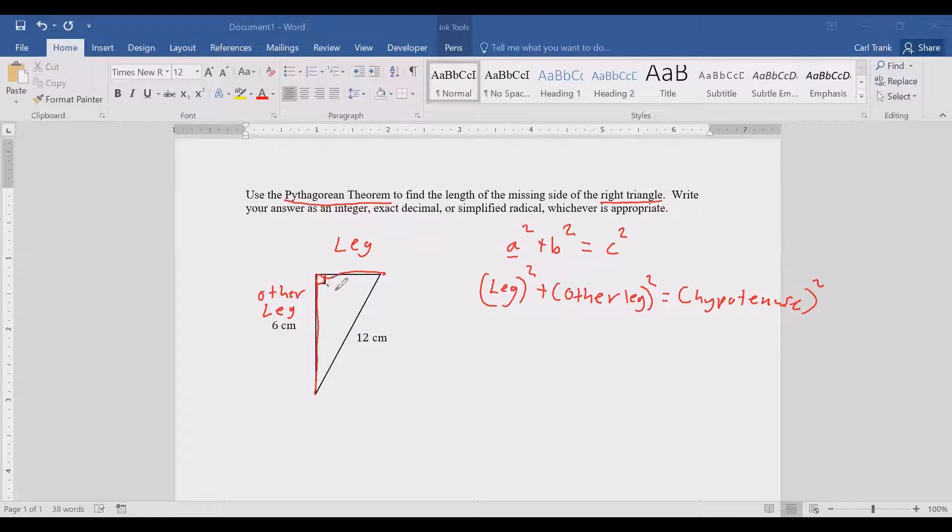The side of the triangle that is opposite of the right angle is called the hypotenuse of the right triangle. Hypotenuse is the letter C in the formula and it's always going to be C squared by itself on one side of the equation.